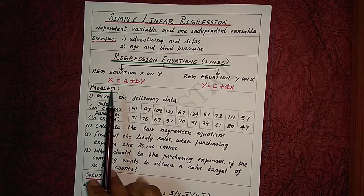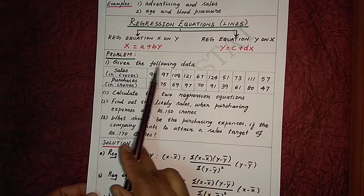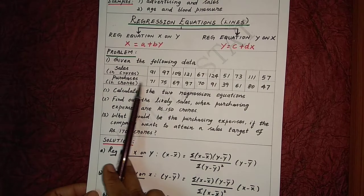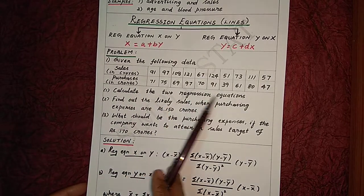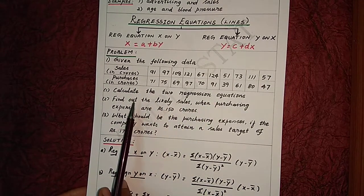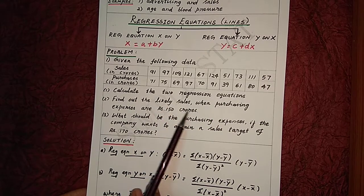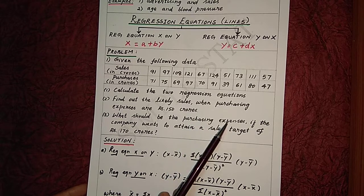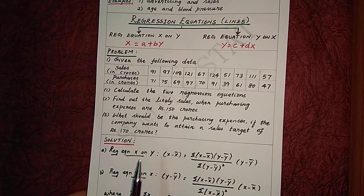Let's now proceed with the problem. Given the following data for sales and purchases, calculate the two regression equations. Find out the likely sales when purchasing expenses are Rs. 150 crores. Also, what should be the purchasing expenses if the company wants to attain a sales target of Rs. 170 crores?